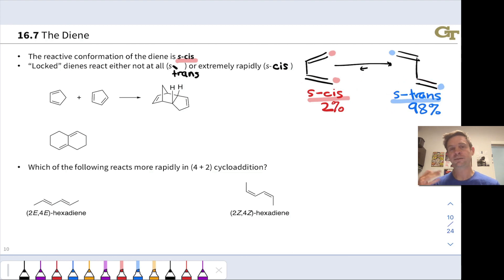An example of a locked S-cis structure is cyclopentadiene, and we're seeing that right here with the two double bonds locked into an S-cis arrangement. You can kind of see the letter, I always think of the letter C when I see this, right? S-cis. It's locked in that orientation.